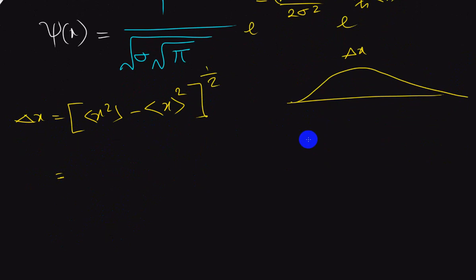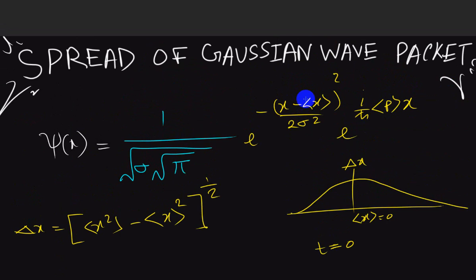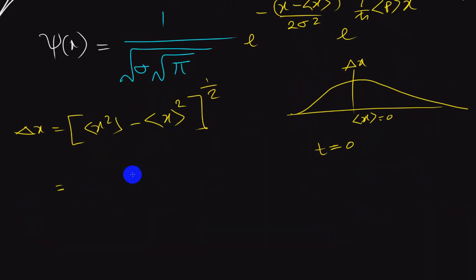If we assume time is 0 — at the moment the time is 0 — the wave is centered such that the expectation value is 0. When the time is 0, the wave is centered at 0. We know that will only be the case if the expectation value of x is 0. So we put 0 in that term.